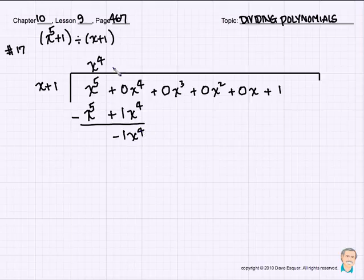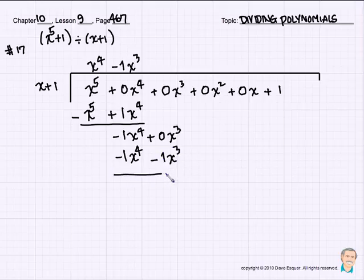Now how do we get a negative 1x to the 4th? Well, we better multiply it by a 1x cubed with a negative sign. So we end up with negative 1, and we should bring down our 0x cubed. So we end up with negative 1x cubed times x is negative 1x to the 4th. And negative 1x cubed times 1 is negative 1x cubed. And hopefully you're starting to see the pattern.